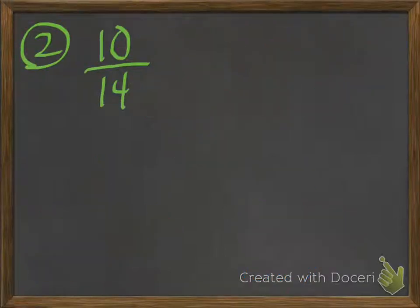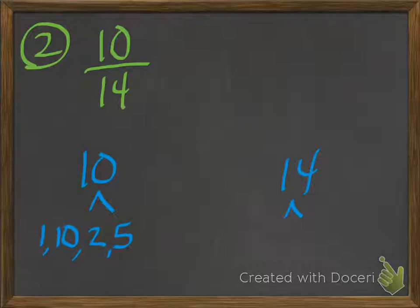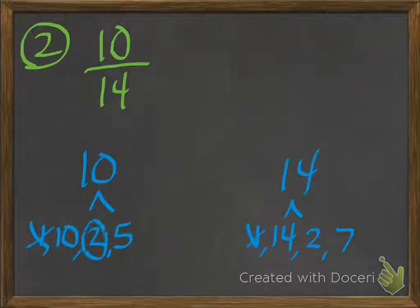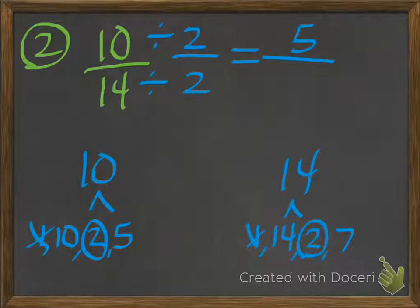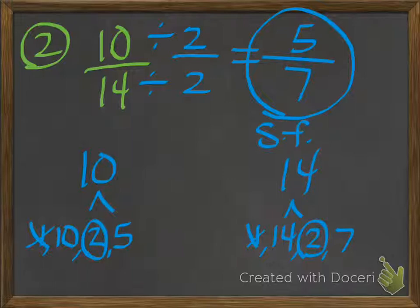Let's try number 2. We have 10 fourteenths. Think of the factors of 10 and the factors of 14. 10 is 1 times 10 and 2 times 5. 14 is 1 times 14 and 2 times 7. Circle any factors that are the same except for 1 — they both share the factor 2. So I can divide both the 10 and the 14 by 2. Remember, if I do it to the top, I have to do it to the bottom. 10 divided by 2 is 5, and 14 divided by 2 is 7. 5 sevenths is my fraction in simplest form. I cannot divide it down any further — 5 does not share any factors with 7.